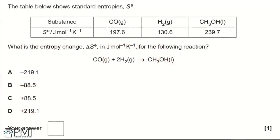A table shows standard enthalpies. What is the enthalpy change in J mol⁻¹ K⁻¹ for the reaction shown? Options: A: −219.1, B: −88.5, C: +88.5, D: +219.1.